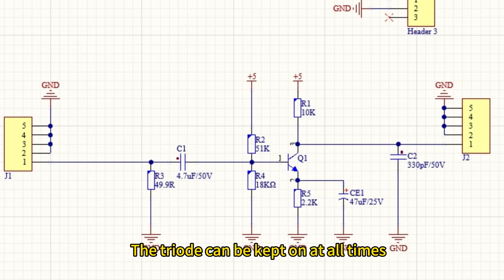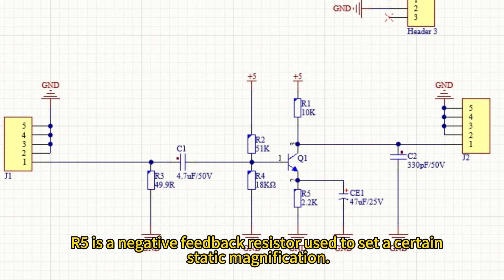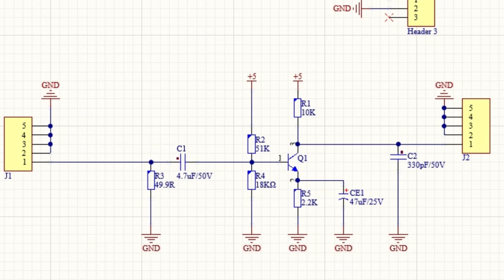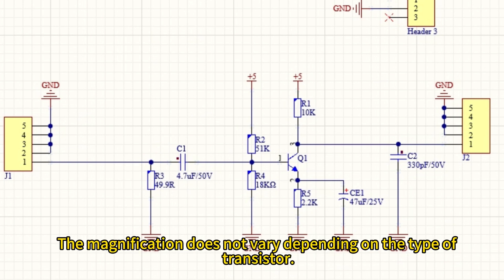The triode can be kept on at all times. R5 is a negative feedback resistor used to set a certain static magnification, and the amplifier of the circuit is independent of the triode used. The magnification does not vary depending on the type of transistor.